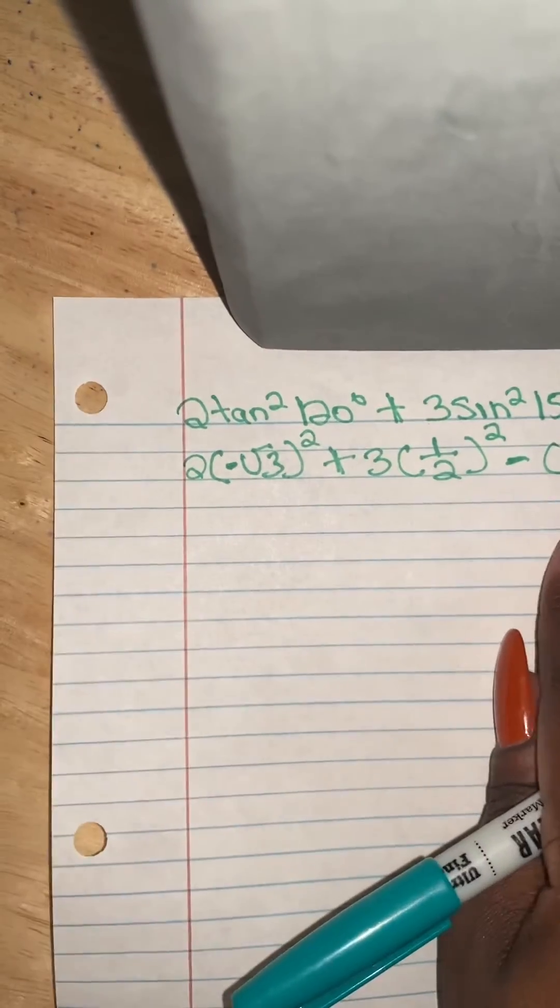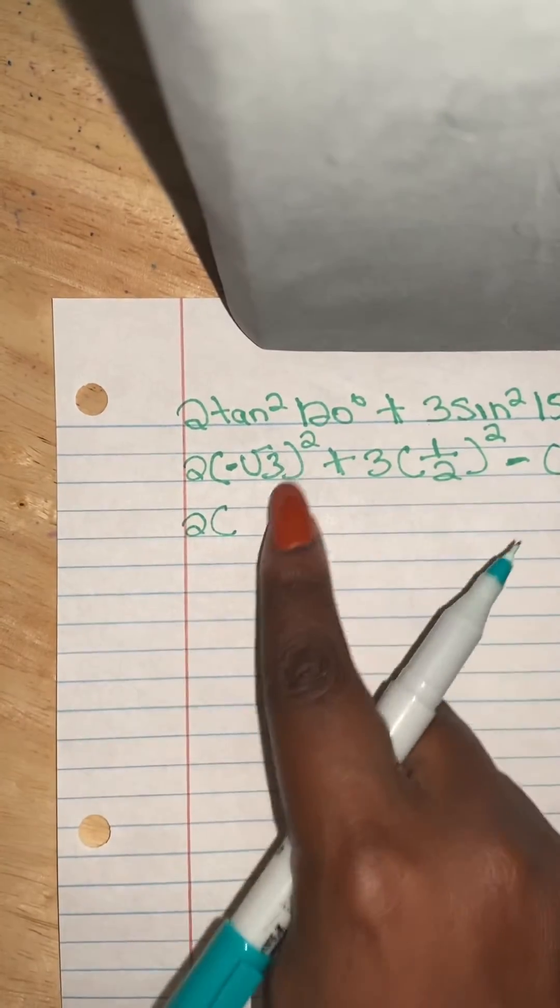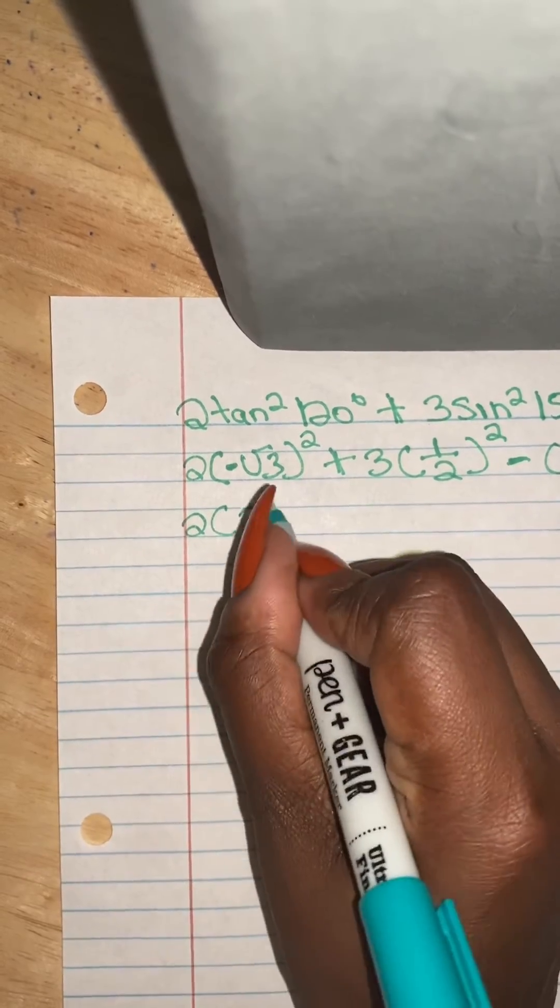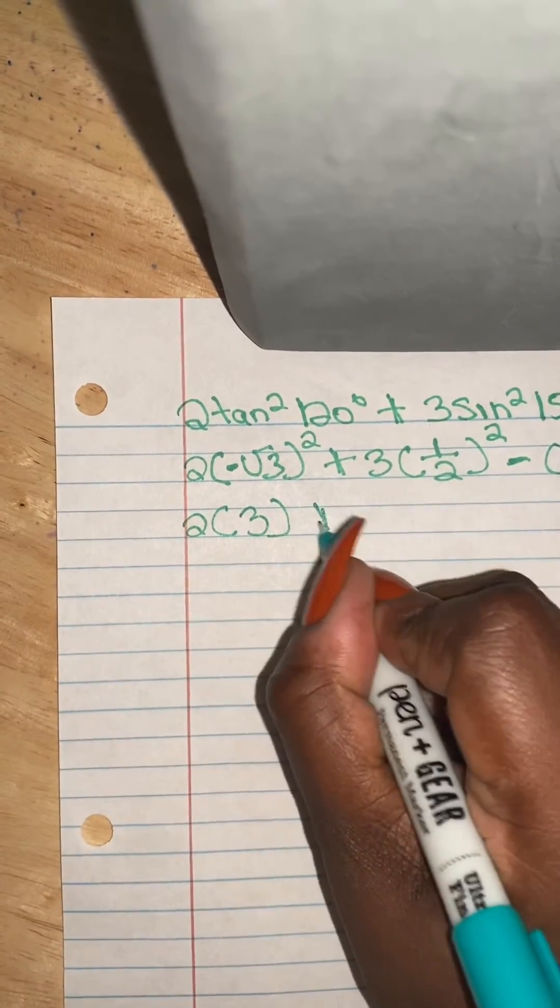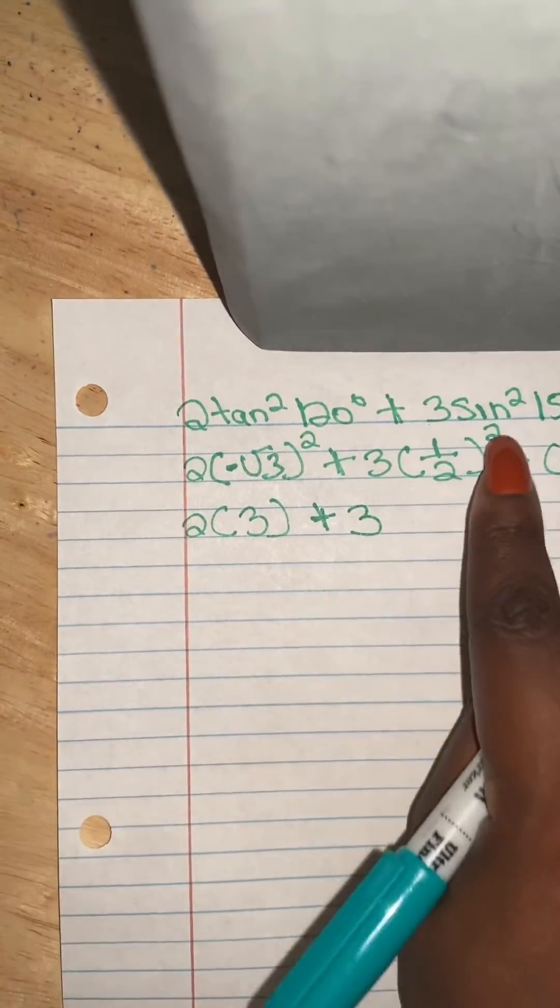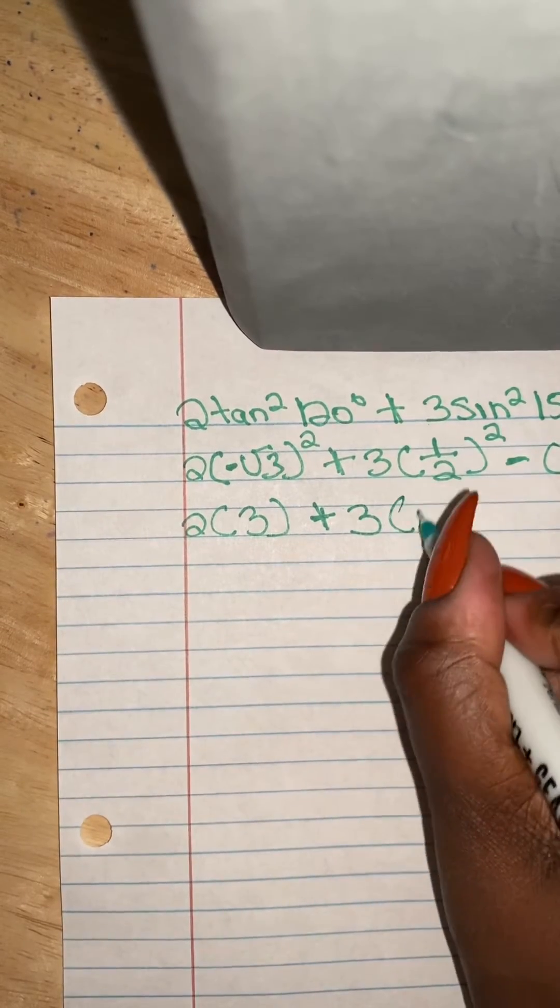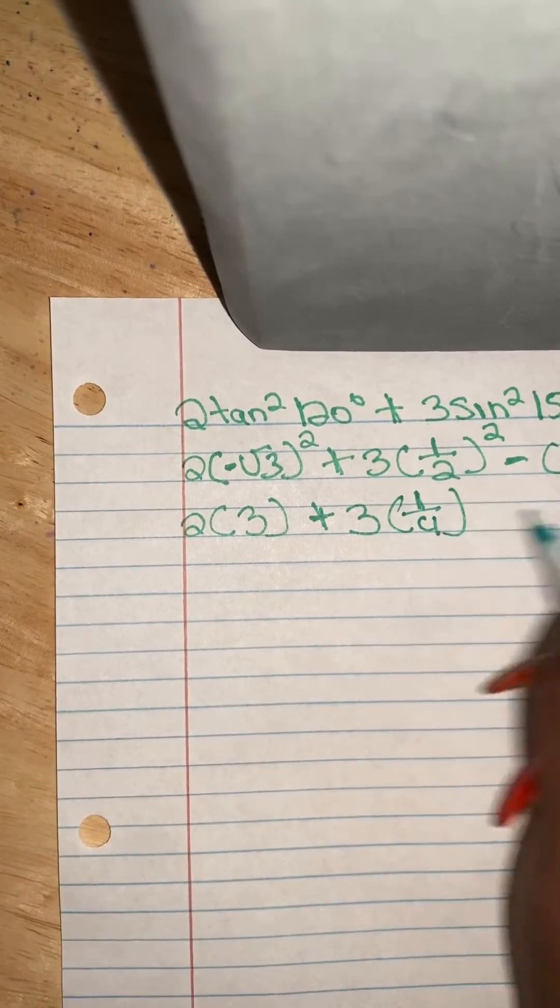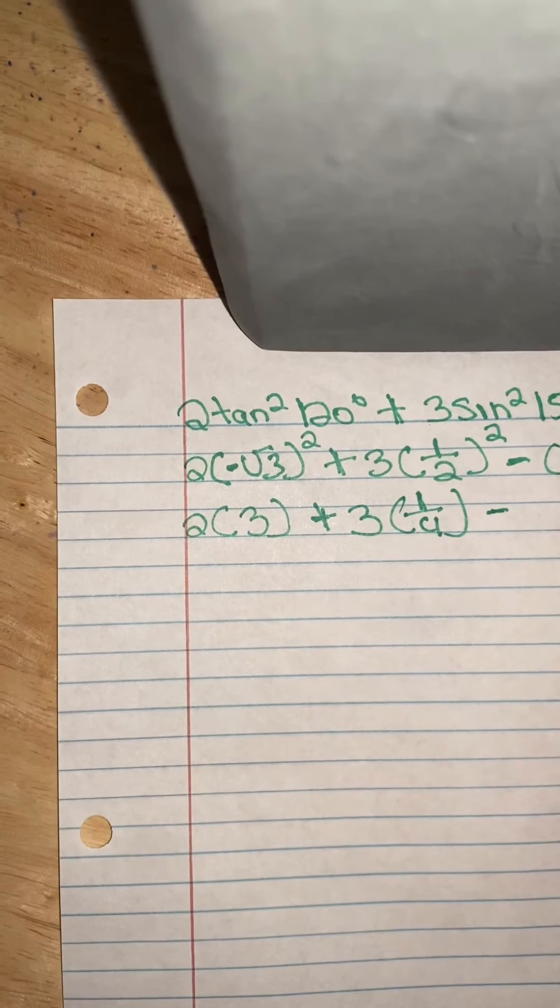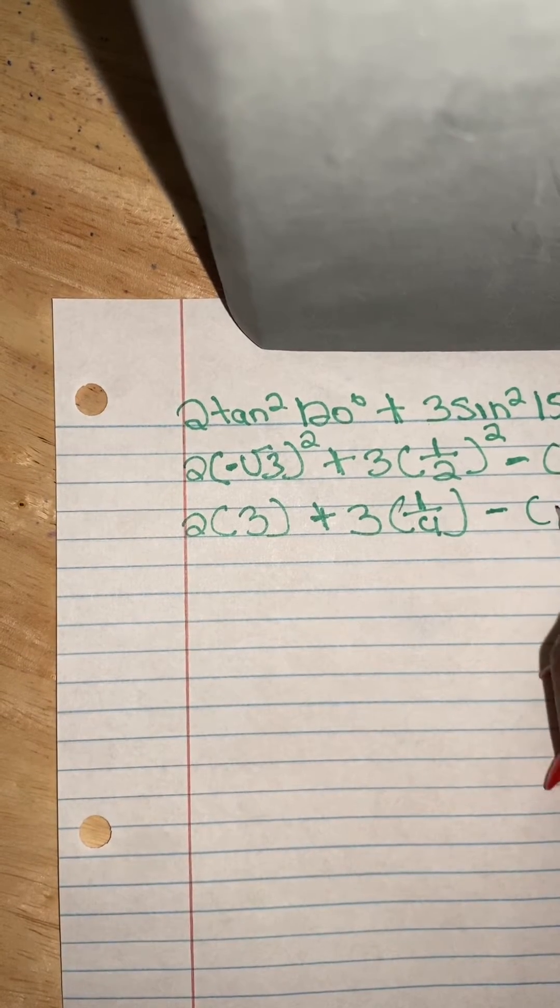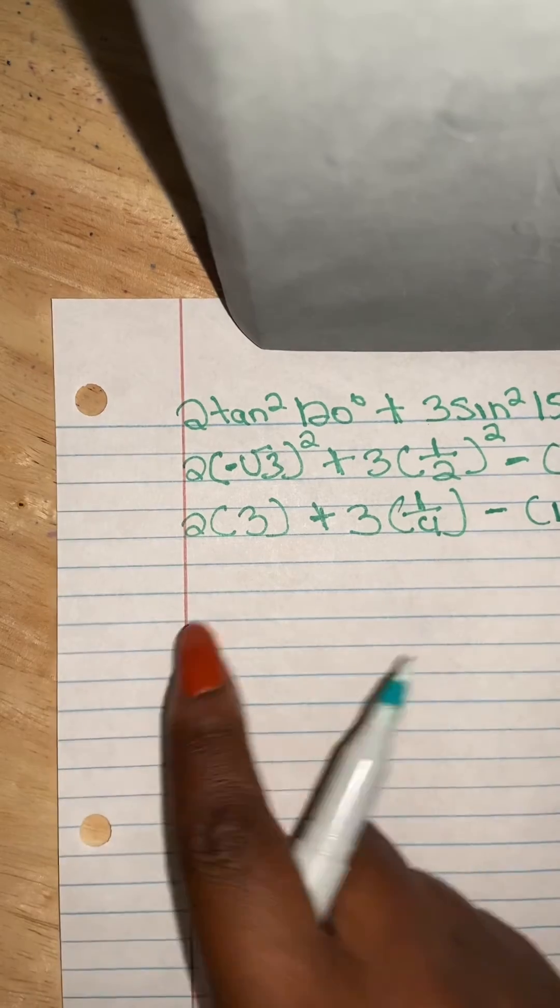So next we are going to do is figure out the value of the exponents on there. So we continue on to simplify. This is going to be 3. This one is going to be 1 fourth. And this is just going to be just 1.